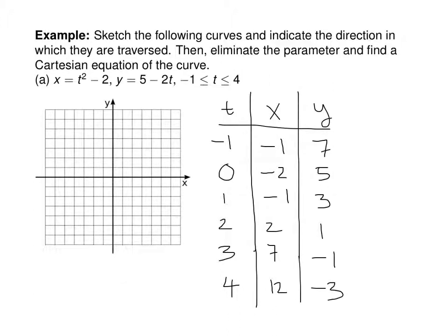Graphing those points: (−1, 7), (−2, 5), (−1, 3), (2, 1), (7, −1), and (12, −3) is a bit off the graph. Something way out there, traced in that direction. We have some kind of sideways parabola going on here.